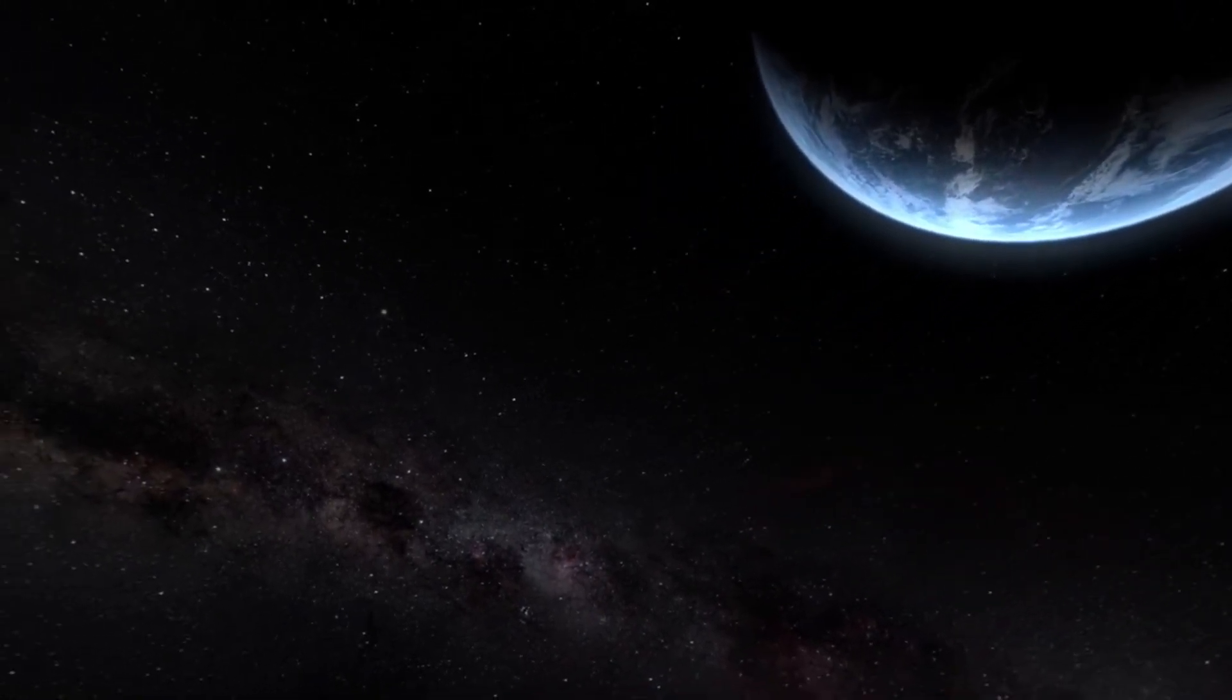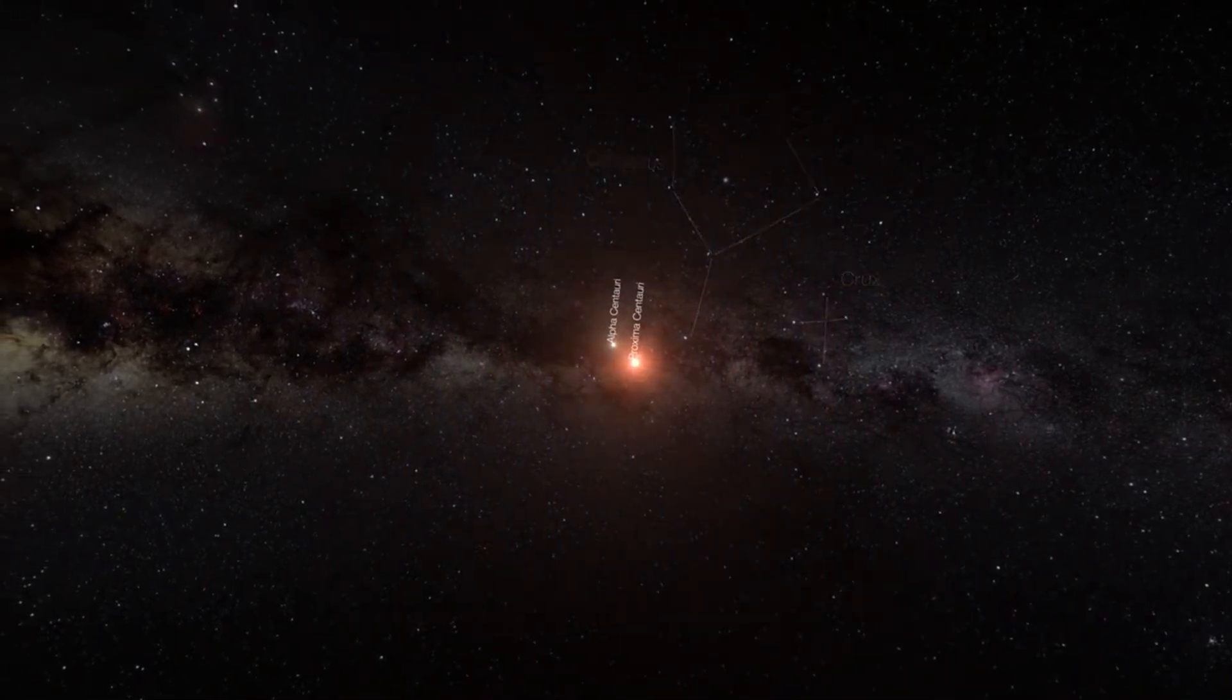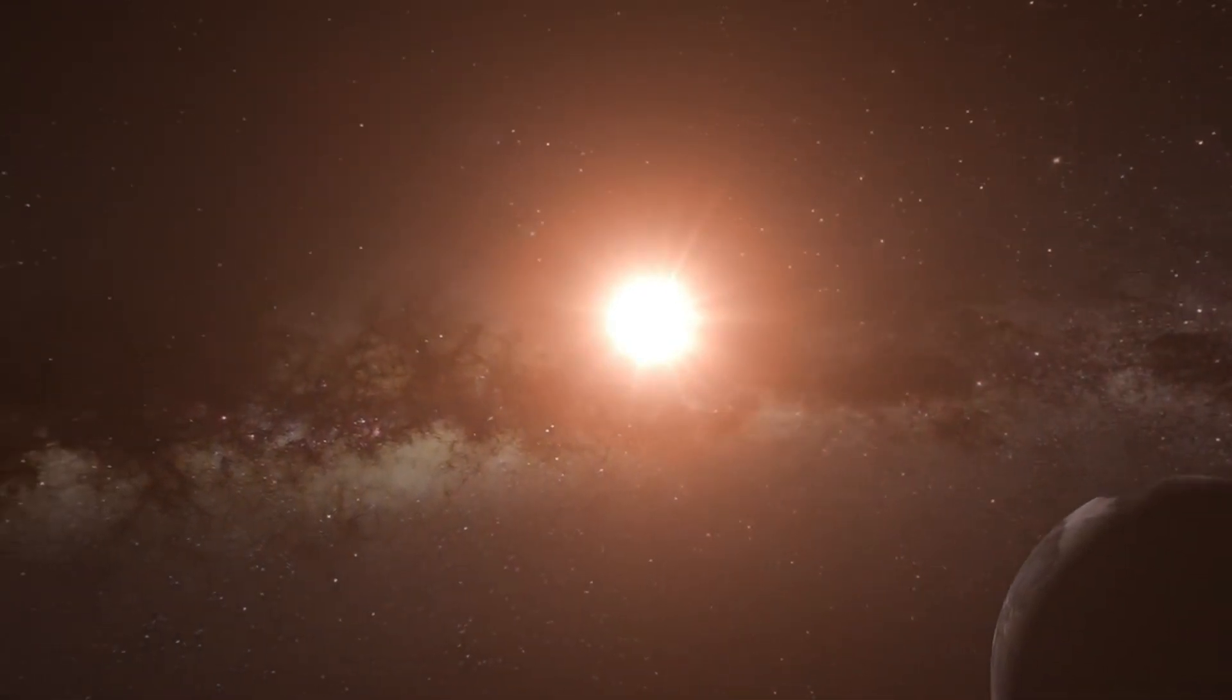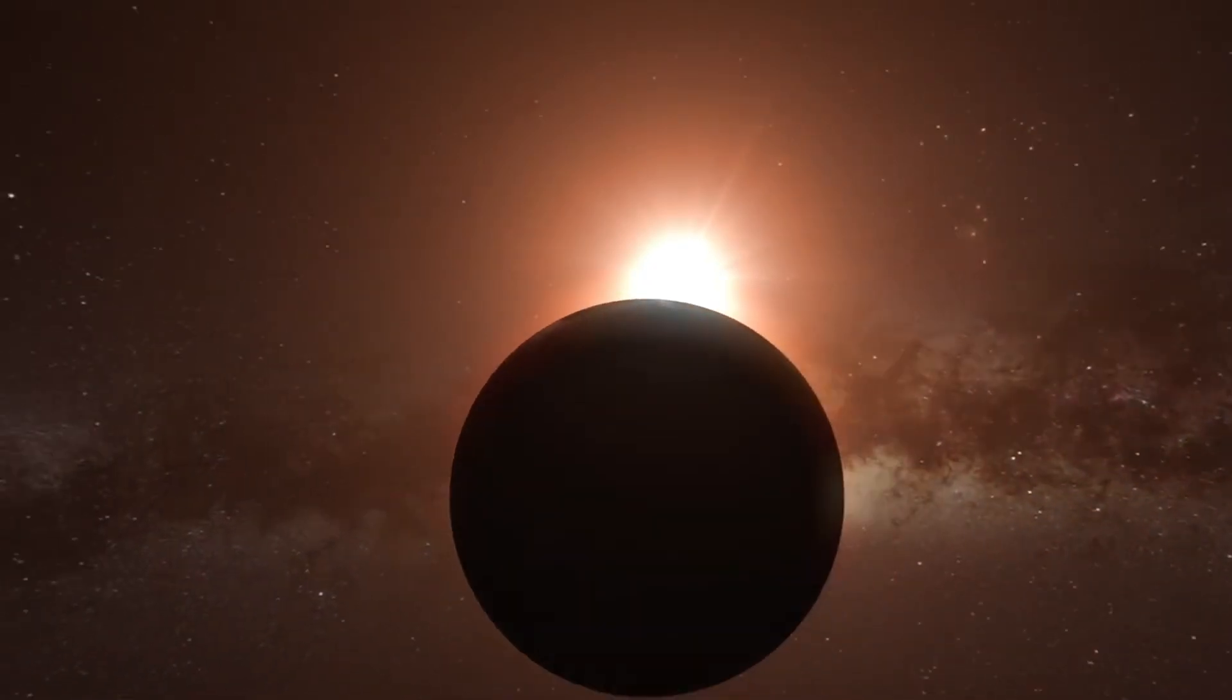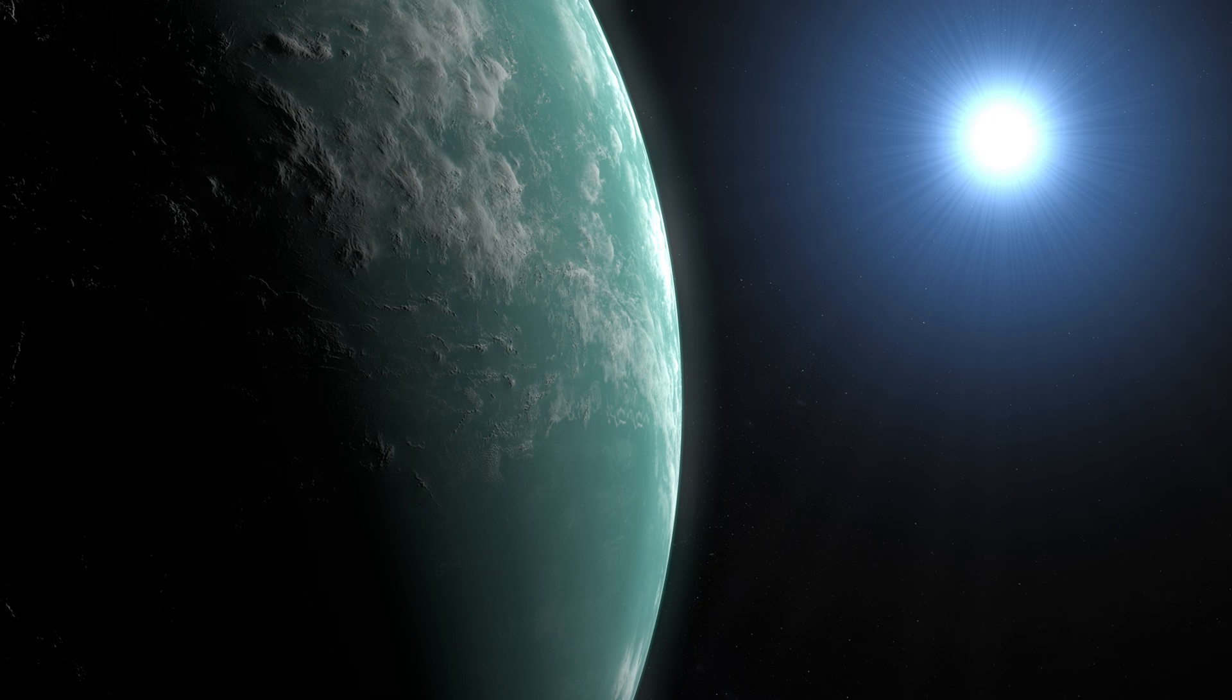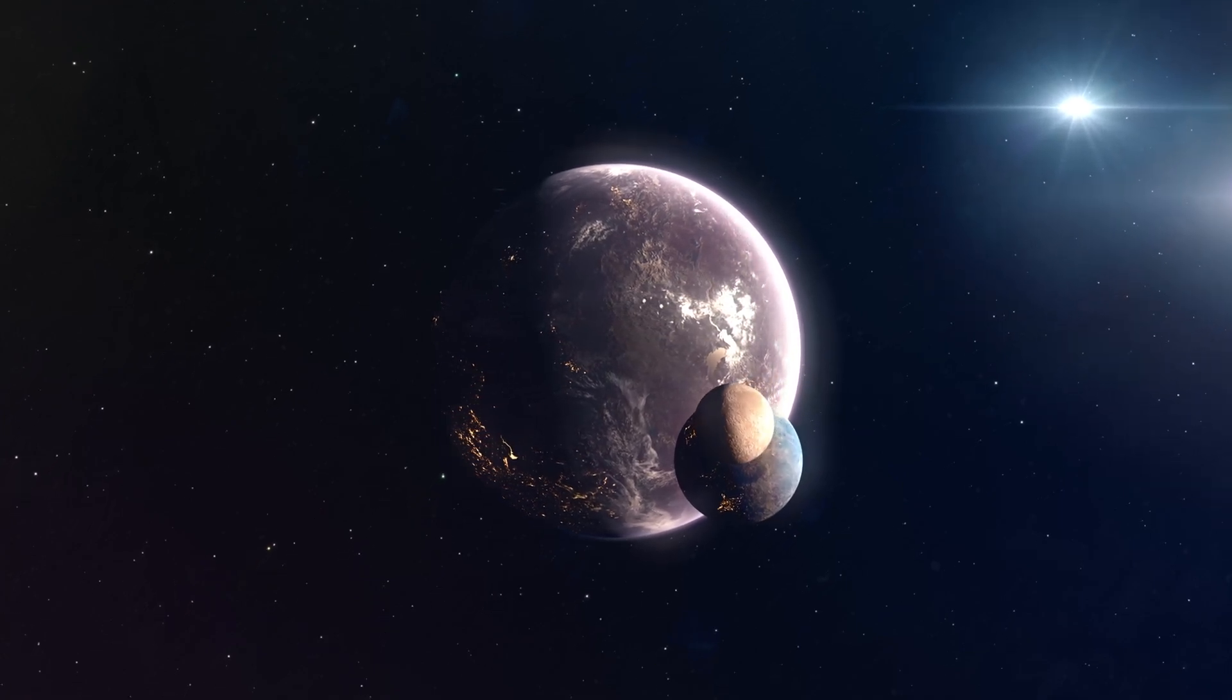Proxima B's environment is no paradise. The red dwarf star it orbits is known for violent solar flares, which could strip away a planet's atmosphere over time. These flares bombard the surface with intense radiation, creating a landscape that's harsh and unforgiving. Yet, if there's life there, it has likely evolved to withstand or even harness these conditions. This raises unsettling questions. Could such a civilization view Earth as a resource or a haven in comparison to their hostile home? And if they have developed the capability to survive on Proxima B, how advanced might their technology be?